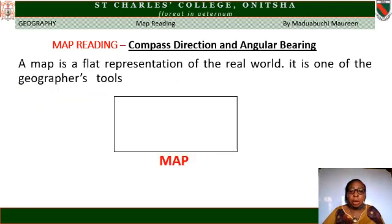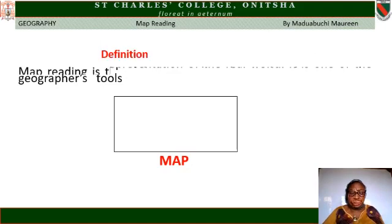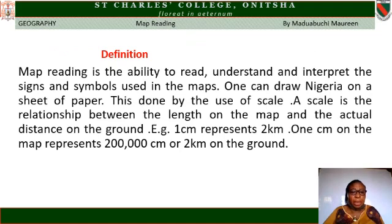Map Reading: Compass Direction and Angular Bearing. A map is a flat representation of the real world. It is one of the geographer's tools. The shape on the screen is a simple representation of the map. Map reading is the ability to read, understand, and interpret the signs and symbols used in maps.